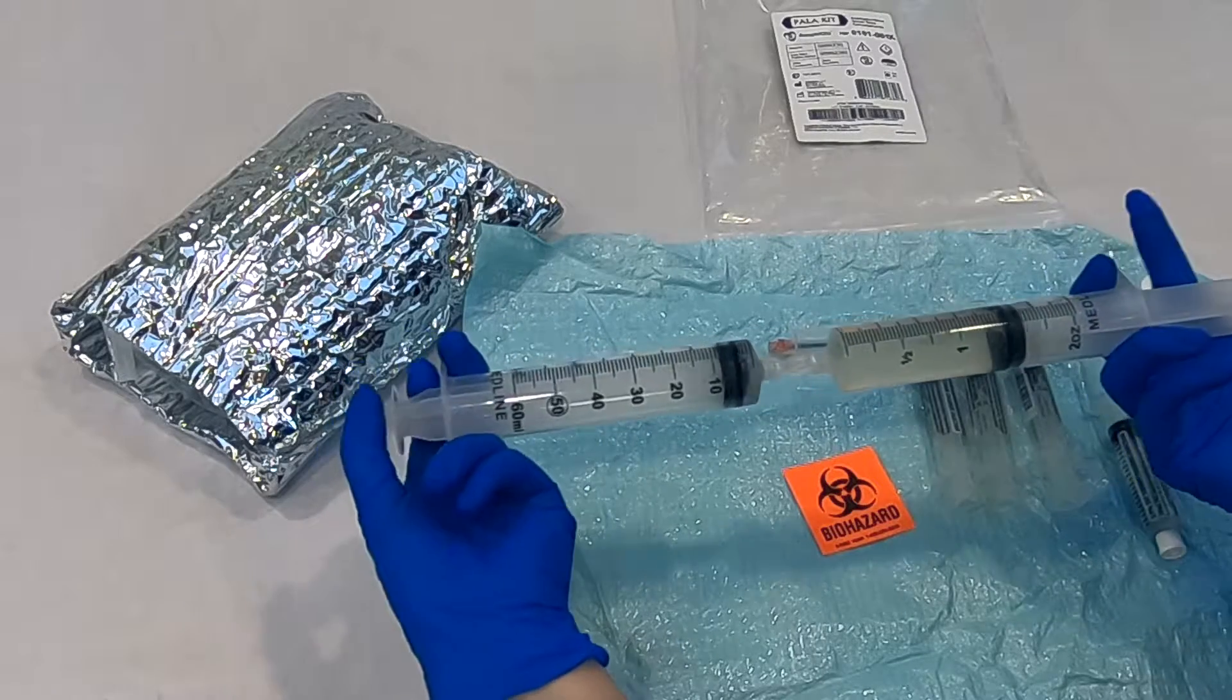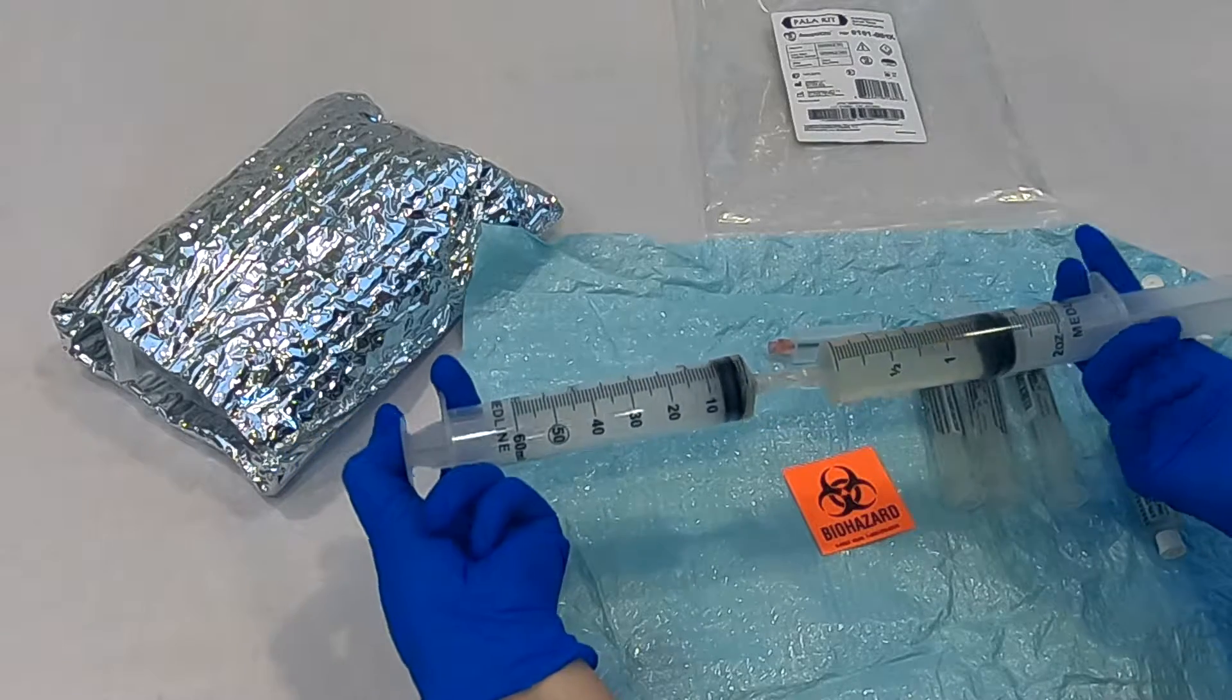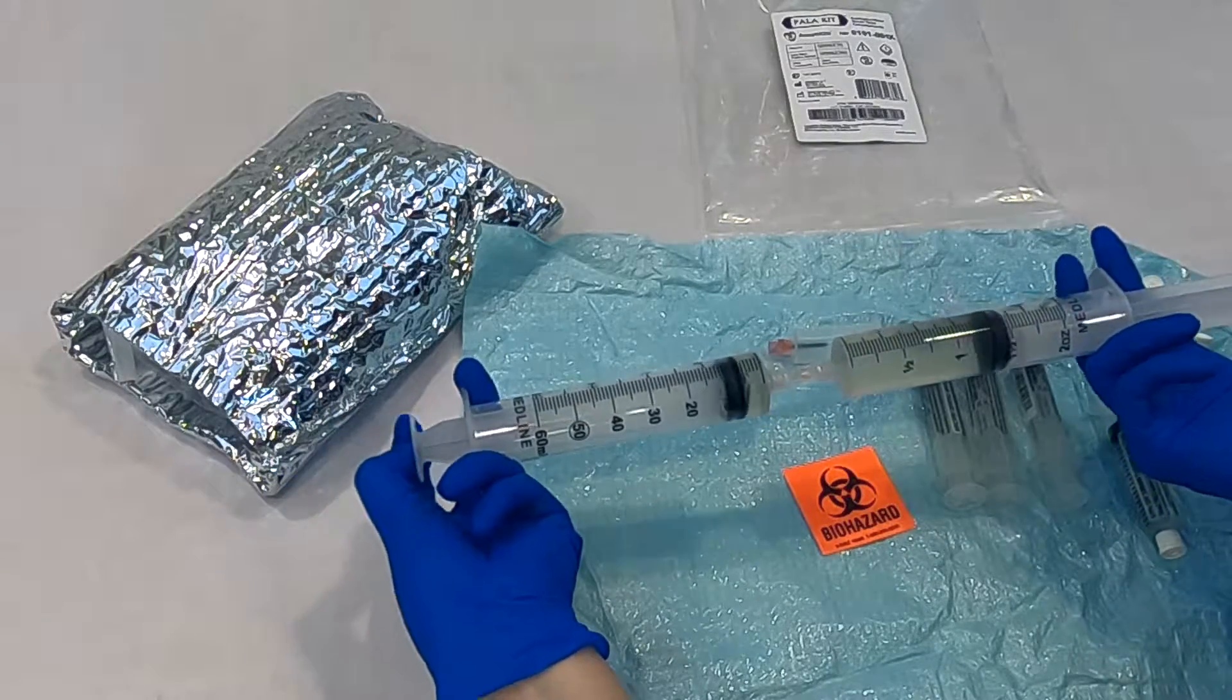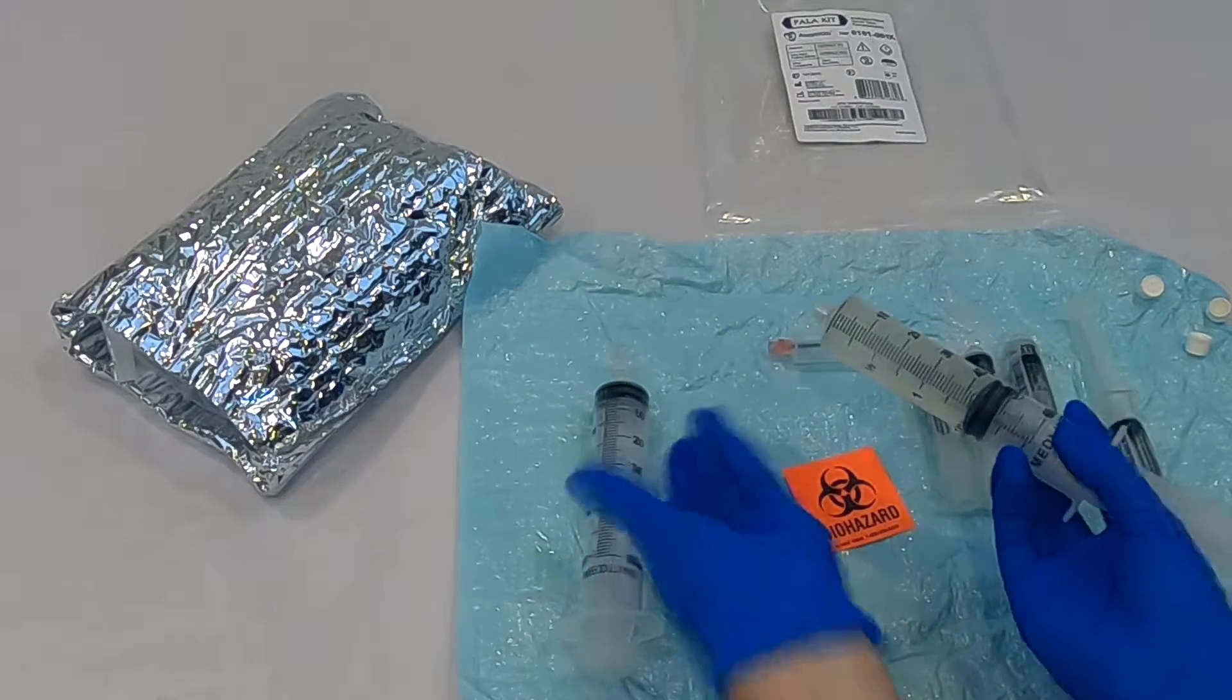Dispense the contents of the syringes back and forth from syringe to syringe at least five times to ensure thorough mixing of the serum and the saline solution. Detach the filled syringe from the female-to-female luer adapter and set aside.